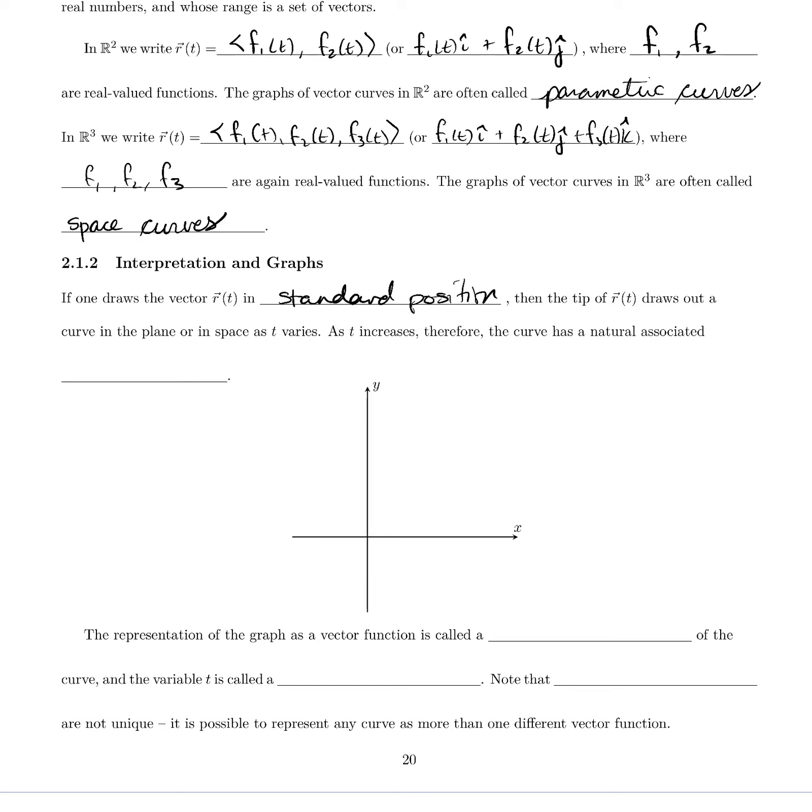then the tip of r draws out a curve in the plane or in space as t varies. It's like a radius—it's not a circle that it's drawing out necessarily, but that's where the r comes from, r like radial. As t increases, the curve therefore has a natural associated direction.